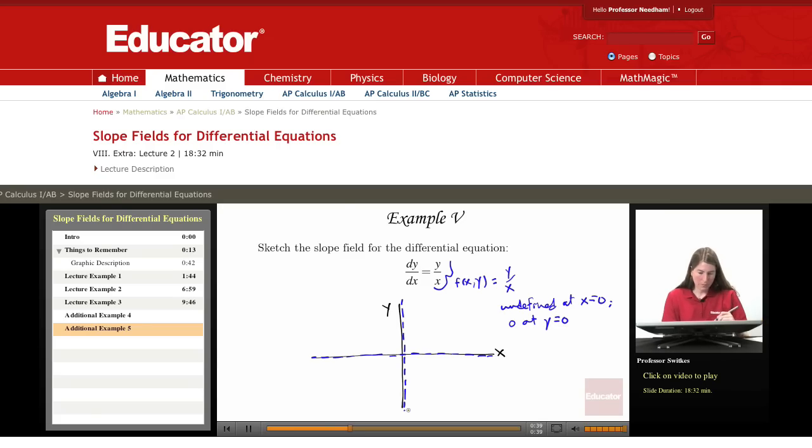And let's look at along the line y equals x. Along the line y equals x, y over x will be 1. So I'll draw in field marks with slope 1.